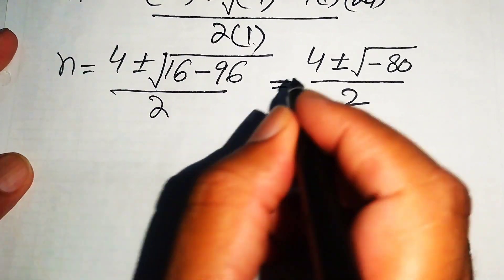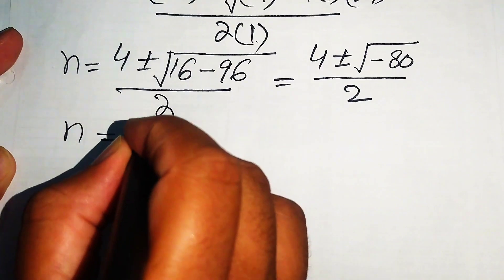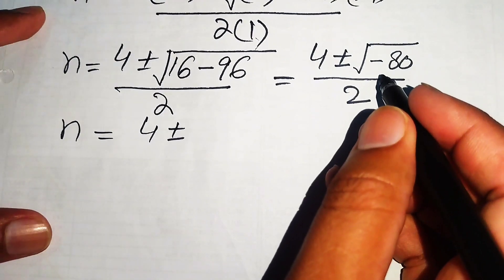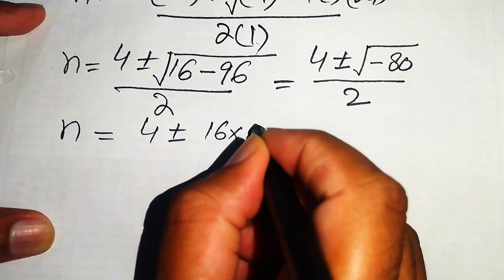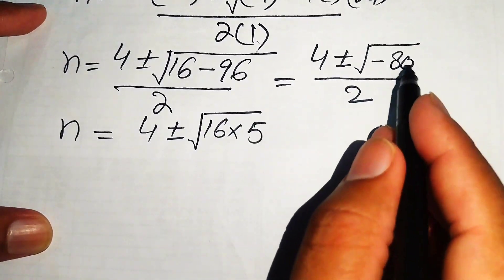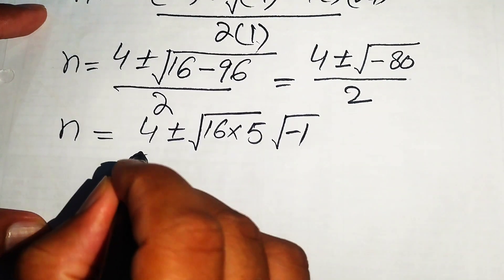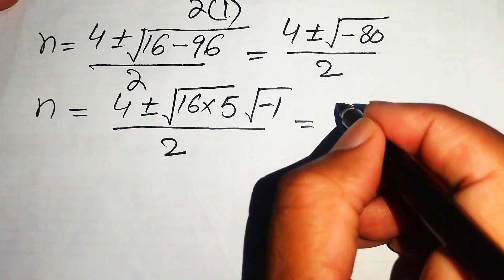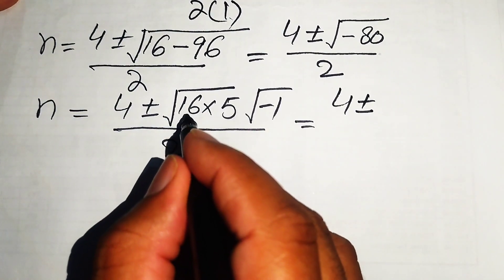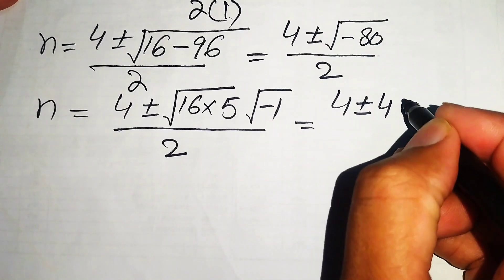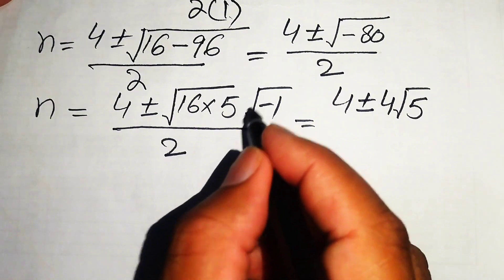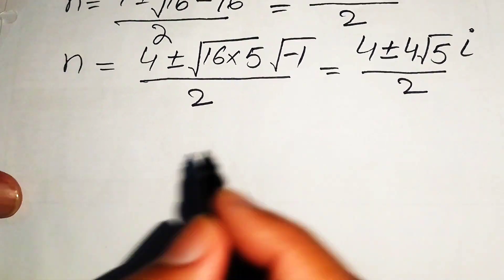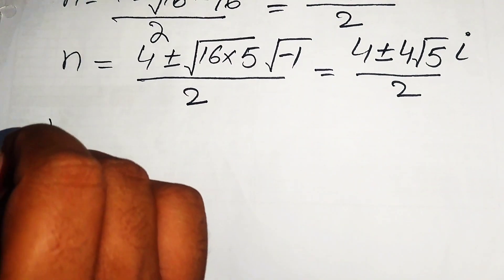We rewrite minus 80 as minus 1 times 16 times 5. Taking the square root, the square root of 16 is 4, and the square root of minus 1 equals i (iota). So the expression becomes 4 plus or minus 4 times the square root of 5 times i, all divided by 2.